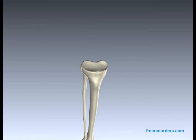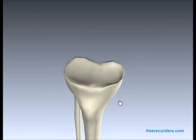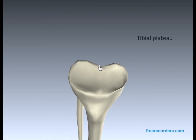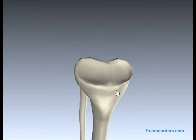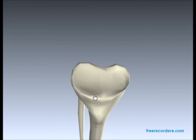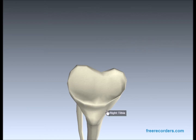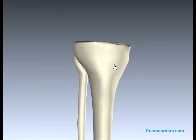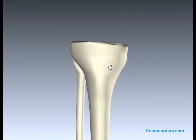Starting at the proximal tibia, we have what's called the tibial plateau. The tibial plateau articulates with the femur to form the knee joint. The menisci sit here — the medial meniscus sits here and the lateral meniscus sits here — which are C-shaped cartilage rings that act as shock absorbers for the knee joint.